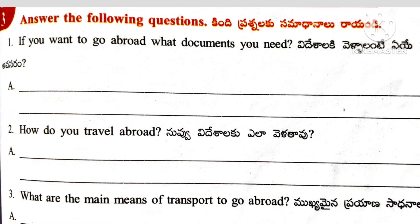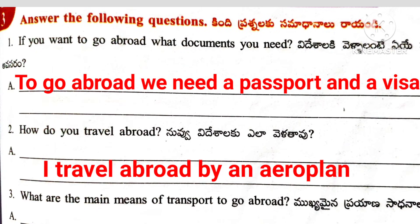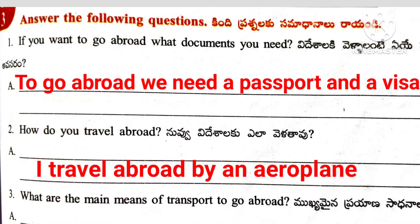Answer the following questions. First question: If you want to go abroad, what documents do you need? Answer: To go abroad, we need a passport and a visa. Second question: How do you travel abroad? Answer: I travel abroad by an aeroplane.